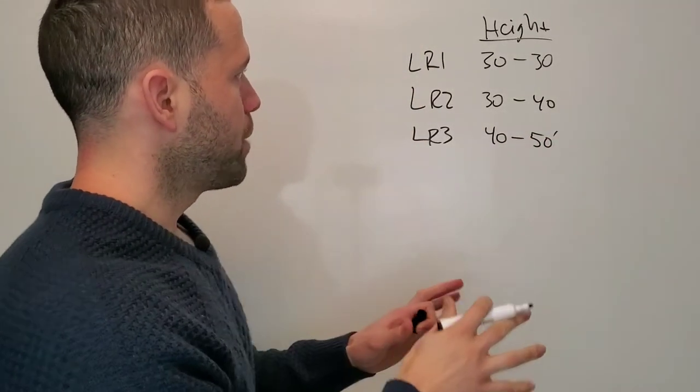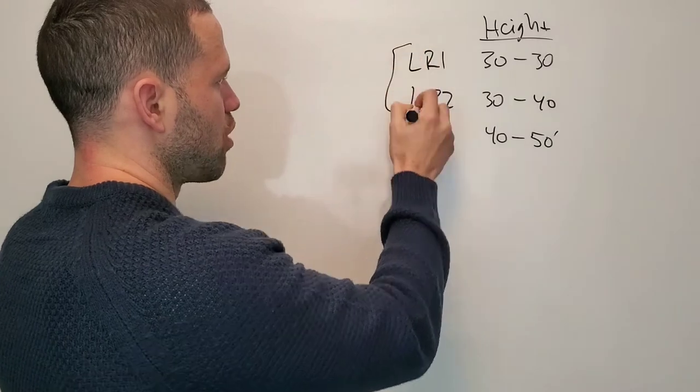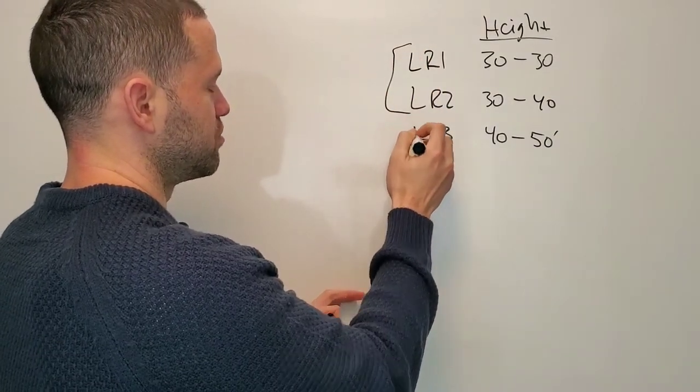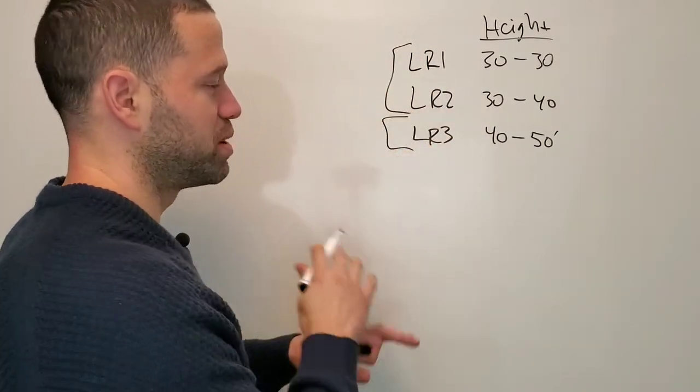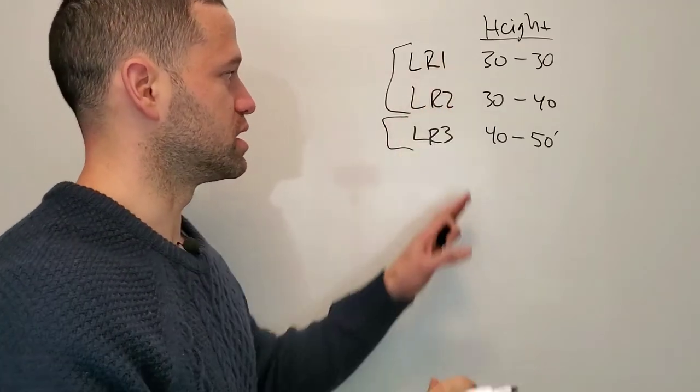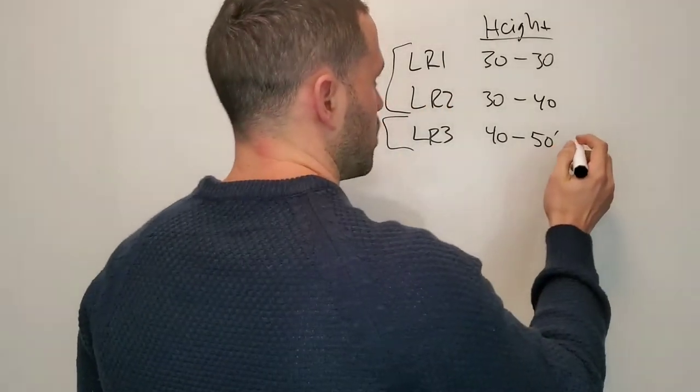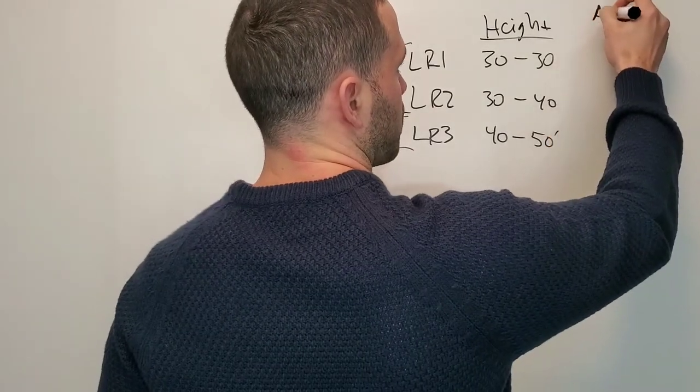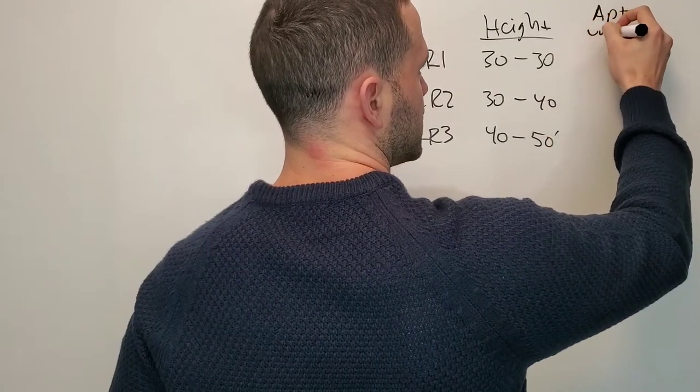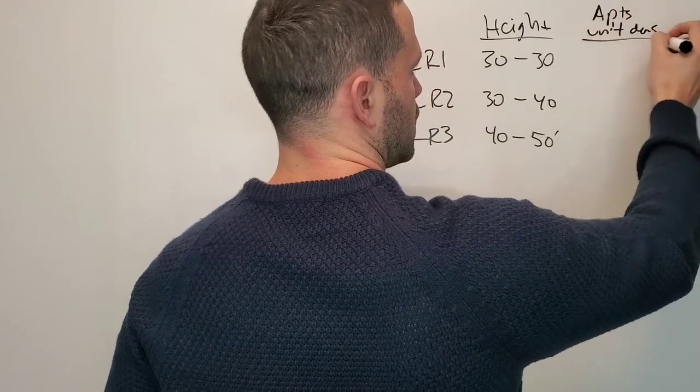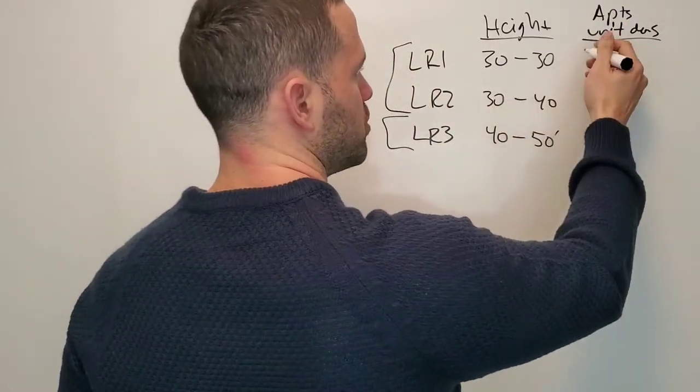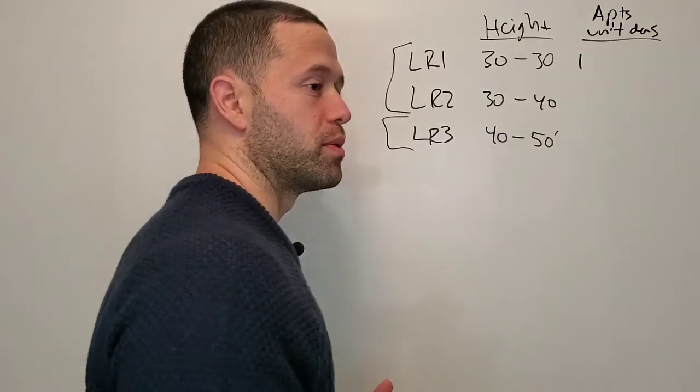These were always townhomes, and people have been building townhomes on all of this almost exclusively. But what's going to happen is it's going to move to apartments. Here's the apartment unit density: LR1 used to be you could only build one apartment for every 2,000 square feet of lot area.